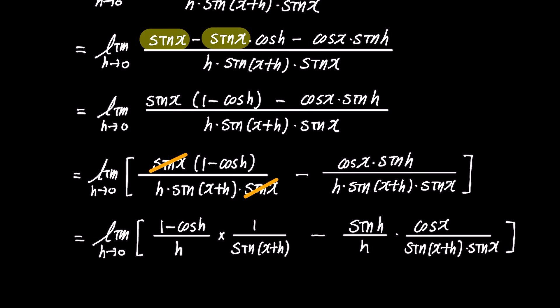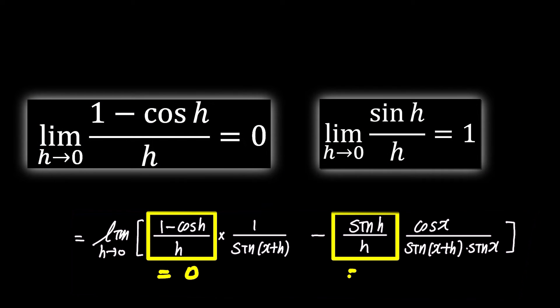By rearranging the expression in this way, we can observe the two limit expressions mentioned earlier in the video. The limits highlighted in yellow boxes are as shown on the screen, namely 0 and 1 respectively.